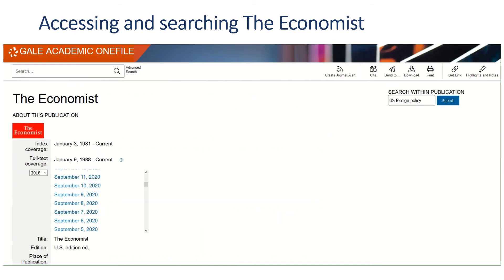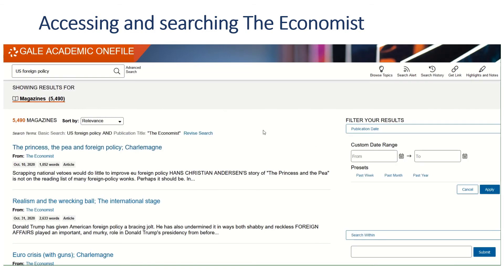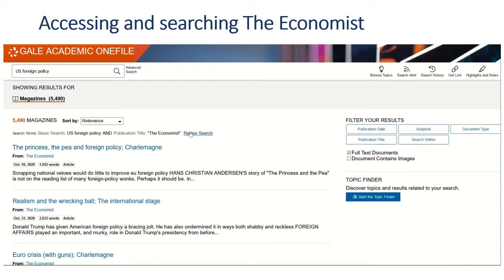Going back to the homepage — you might not always have a specific article in mind and you might need to do a general search. The search within publication box at the top right of the screen is where to go. I've already set up a search on US foreign policy.